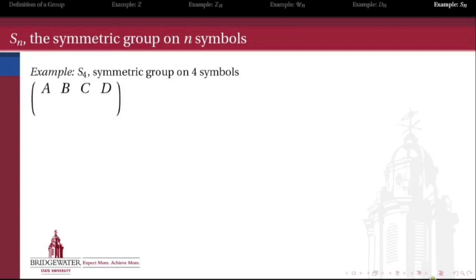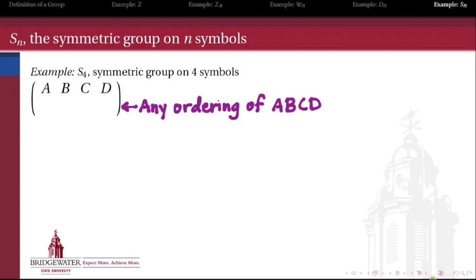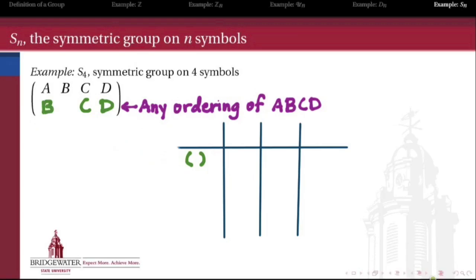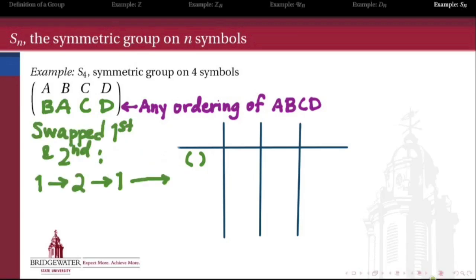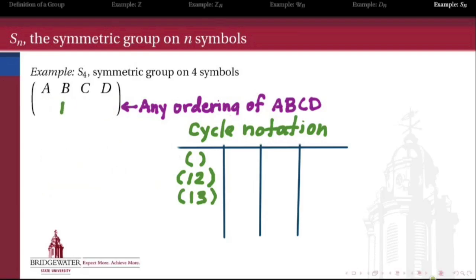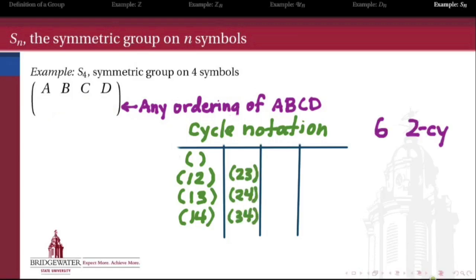We're going to look at all the different ways of rearranging those four symbols. Each rearrangement — each way of writing A, B, C, D underneath A, B, C, D in some ordering — gives one element of the symmetric group on four symbols. If we write them in the same order, doing nothing to permute A, B, C, D, we get the identity element. We can also transpose A and B, swapping the first and second symbols: one goes to two and two goes to one. In so-called cycle notation, we write that as (1 2). There are six distinct two-cycles total, corresponding to all the ways of swapping two elements.